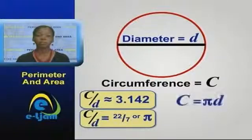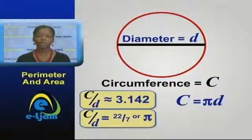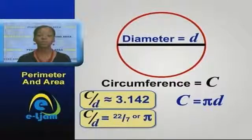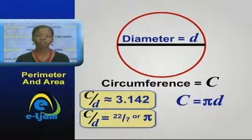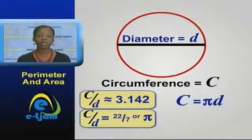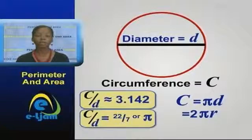If we were to make the circumference the subject of the formula, it would be equal to pi times the diameter. And this is how we find the circumference or perimeter of any circle. Of course, since the diameter is the same as 2 times the radius, an alternative formula for the circumference is 2 times pi times radius.